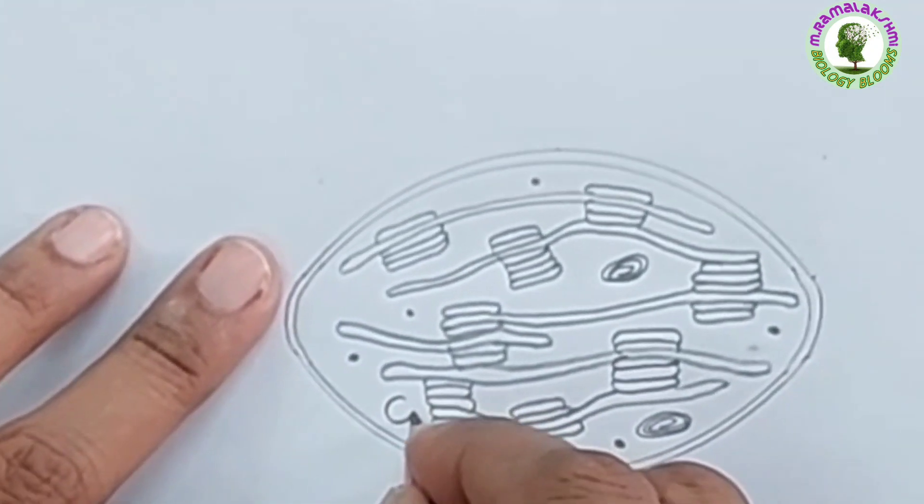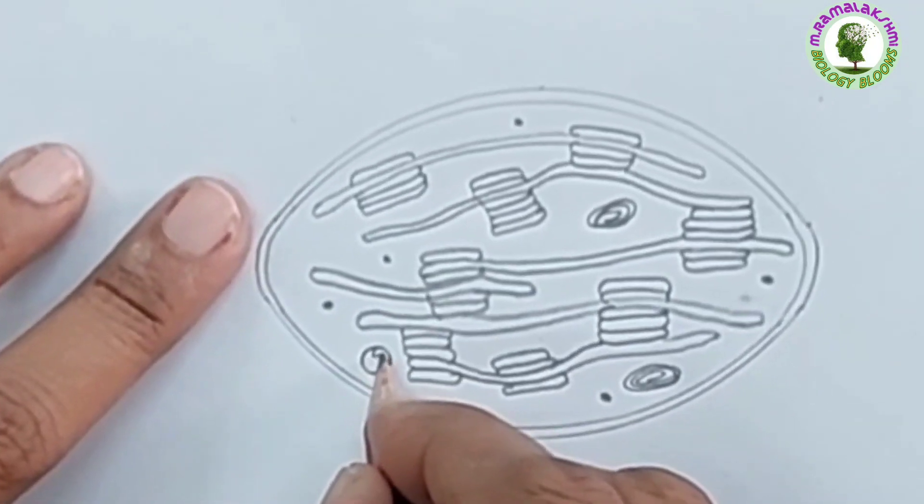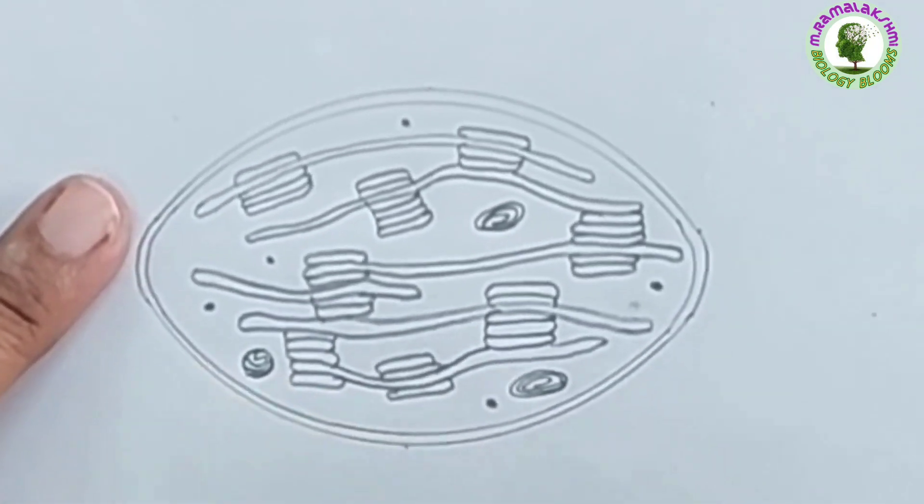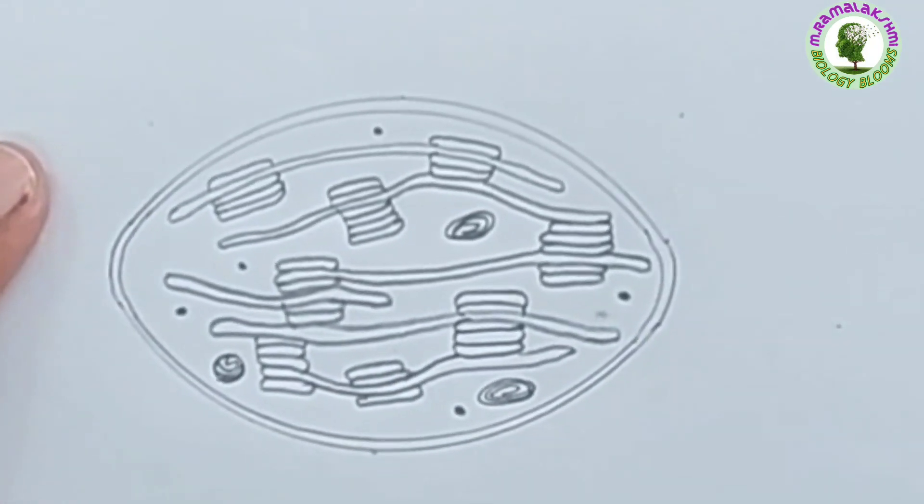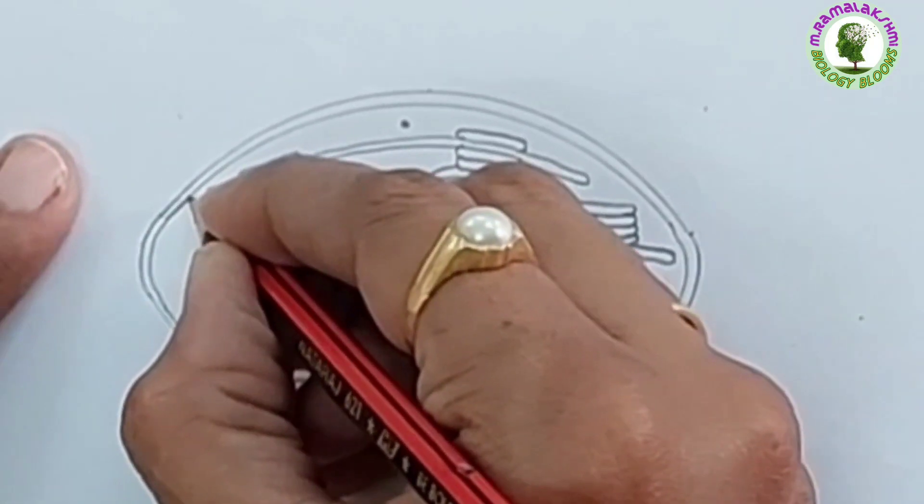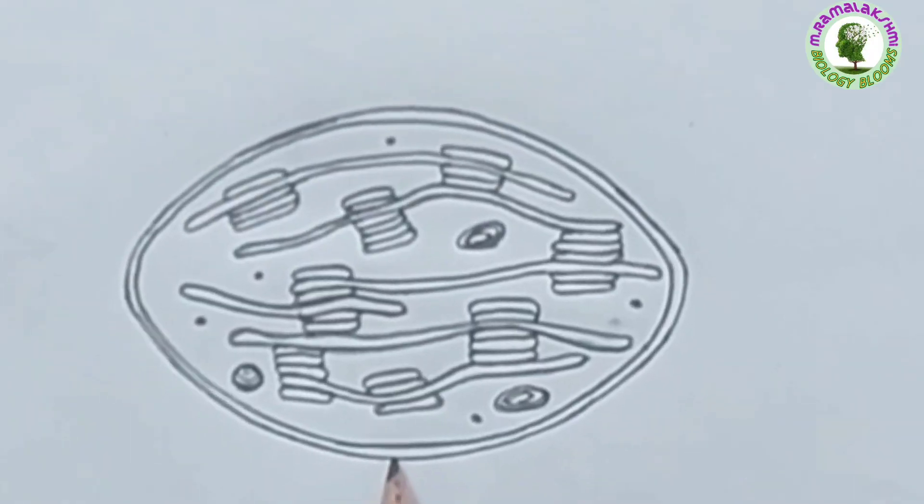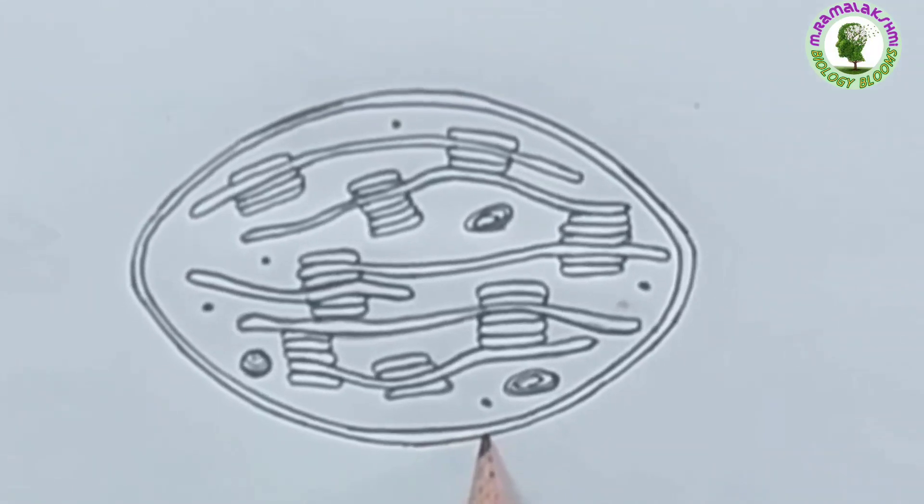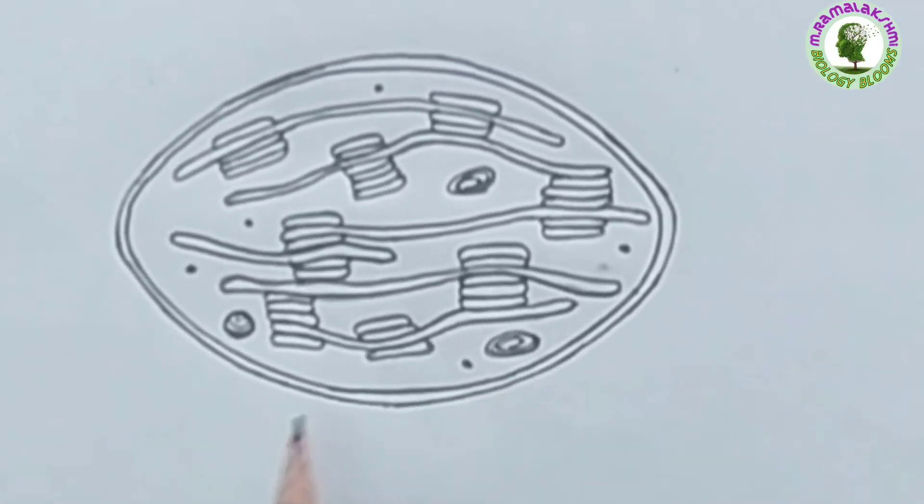Draw a small circle and draw the line in it like this. Your diagram is ready, children. Now, dot the diagram. See how beautiful your chloroplast is.